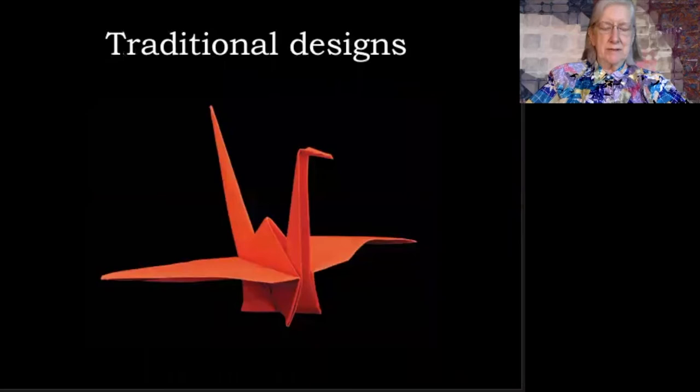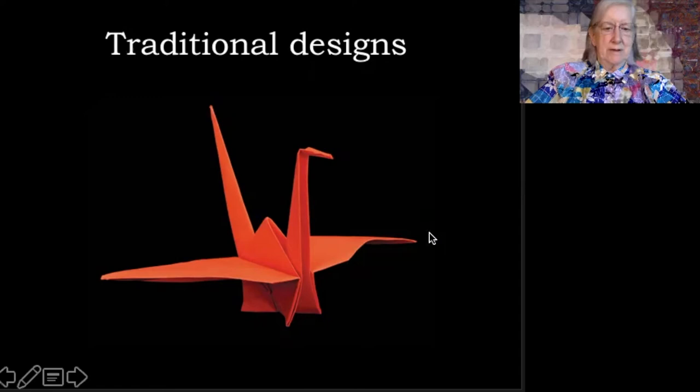Possibly the most famous of the traditional designs is the origami crane, an elegant bird with four points. It has a point at the tail, a point at the beak, and two wings, and it develops a three-dimensional form out of two-dimensional paper.